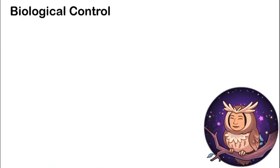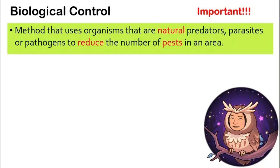Next, we will look at something very interesting called biological control. This is a very popular topic that teachers like to use in examinations — mid-year exams, topical tests, final year exams, even PT3. So make sure you understand it. Biological control is a method used by farmers where they use natural predators, parasites, or pathogens to reduce the number of pests in an area. Pests are animals we do not like, such as rats or cockroaches, that cause damage.